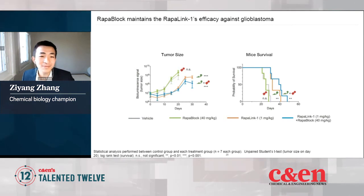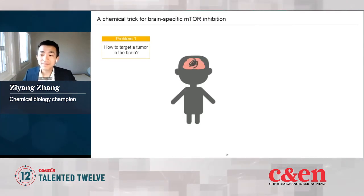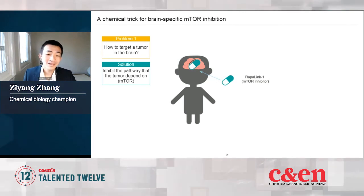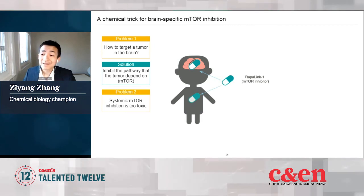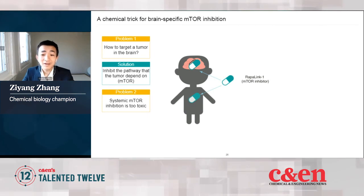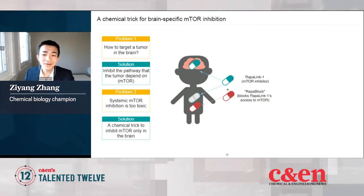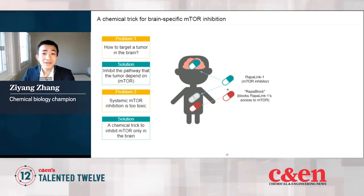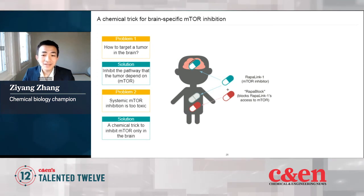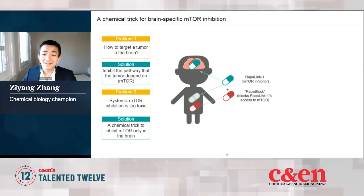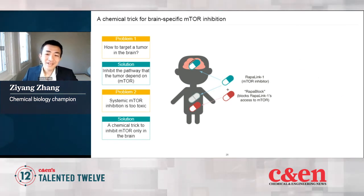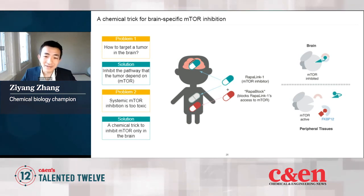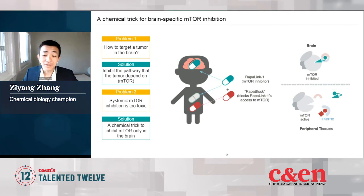To summarize: we started with the problem of how to treat a tumor in the brain. The potential solution was to target a vulnerability of these tumor cells using an mTOR inhibitor, but inhibiting mTOR everywhere is bad. So we developed a chemical trick using a second molecule to control when the first molecule works, achieving selective targeting of brain tissues. Although I only talked about brain tumors today, we have applied this approach to other CNS diseases such as alcohol use disorder and Parkinson's disease.